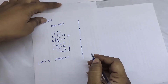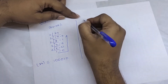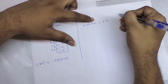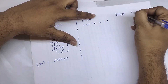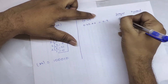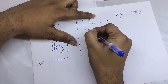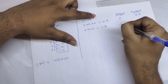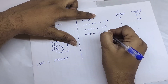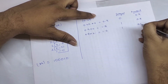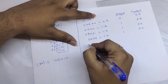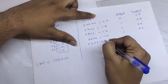Coming to the fractional part 0.45: multiply 0.45 × 2 = 0.9. Integral part is 0, fractional part is 0.9. Then 0.9 × 2 = 1.8 — integral part 1, fractional part 0.8. Then 0.8 × 2 = 1.6 — integral part 1, fractional part 0.6. Then 0.6 × 2 = 1.2 — integral part 1, fractional part 0.2. Then 0.2 × 2 = 0.4 — integral part 0, fractional part 0.4.